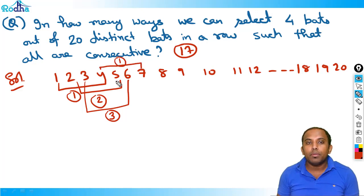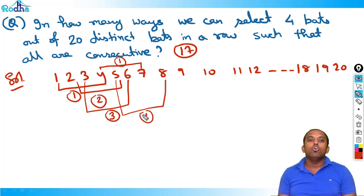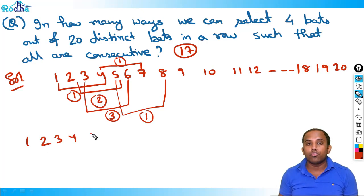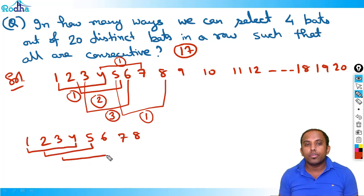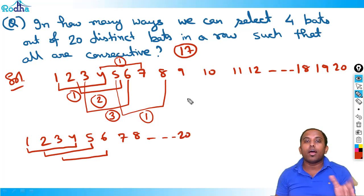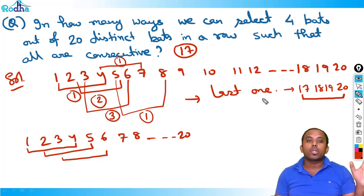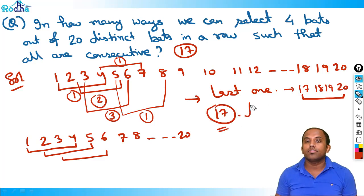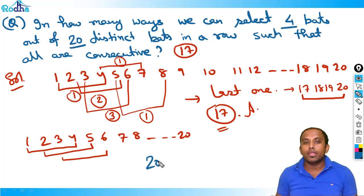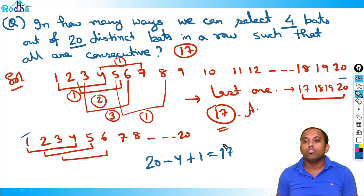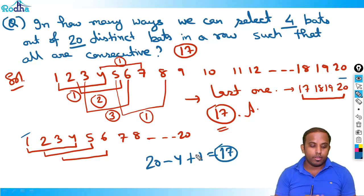What is the answer up to 20? The last block will be from 17 to 20. So it's starting from 1 to 17 — there are 17 such blocks, so 17 is the answer. Or simply: 20 minus 4 gives the difference, and since both 1 and 20 are included, 20 minus 4 plus 1 = 17. So 17 is the answer for this question.